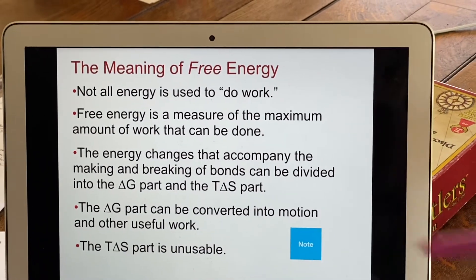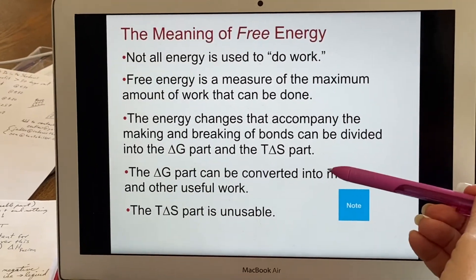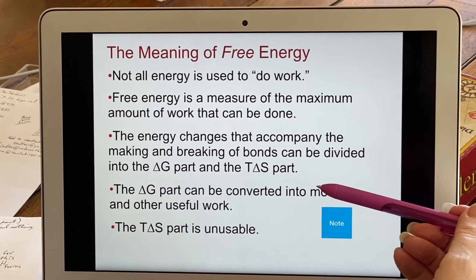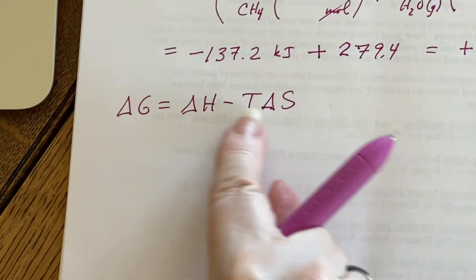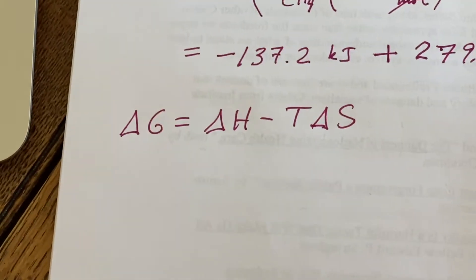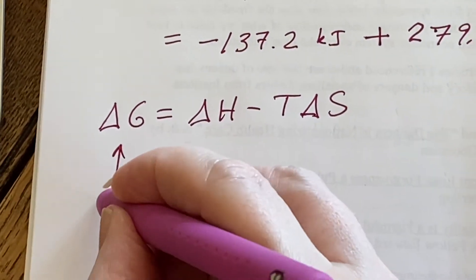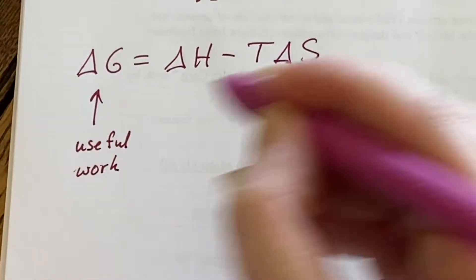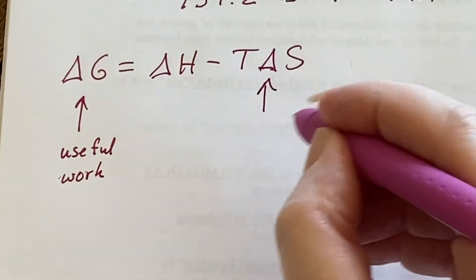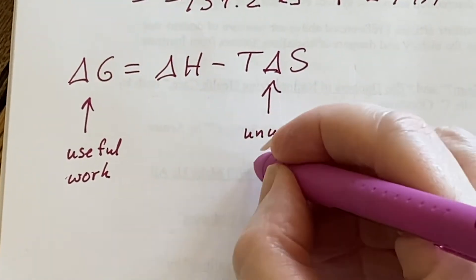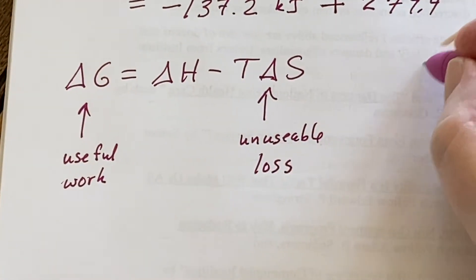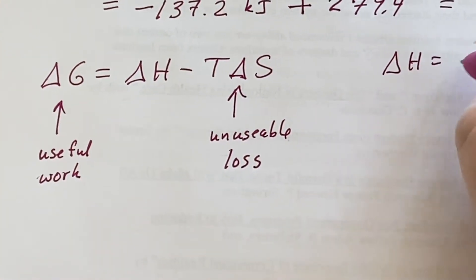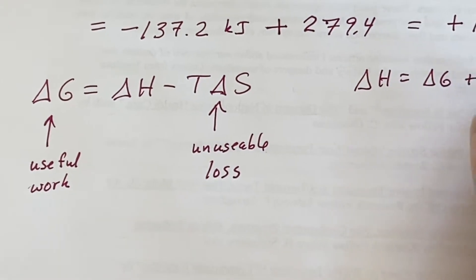And the energy changes we now know because of the formula that we're using, the delta G equals delta H minus T delta S. The energy changes are in two parts. In order to think about that, you would say that delta H is delta G plus T delta S.